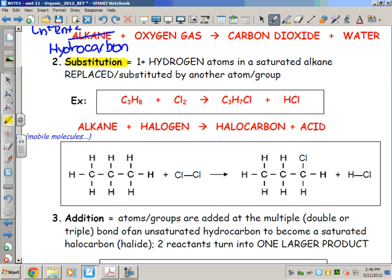The reason I say that is the next type of reaction is called a substitution reaction. In this case, it does have to involve a saturated alkane. It cannot be anything else. And this involves replacing one or more of the hydrogen atoms on one of those saturated alkanes with another atom or group. So a hydrogen—one or more hydrogens—get replaced or substituted.